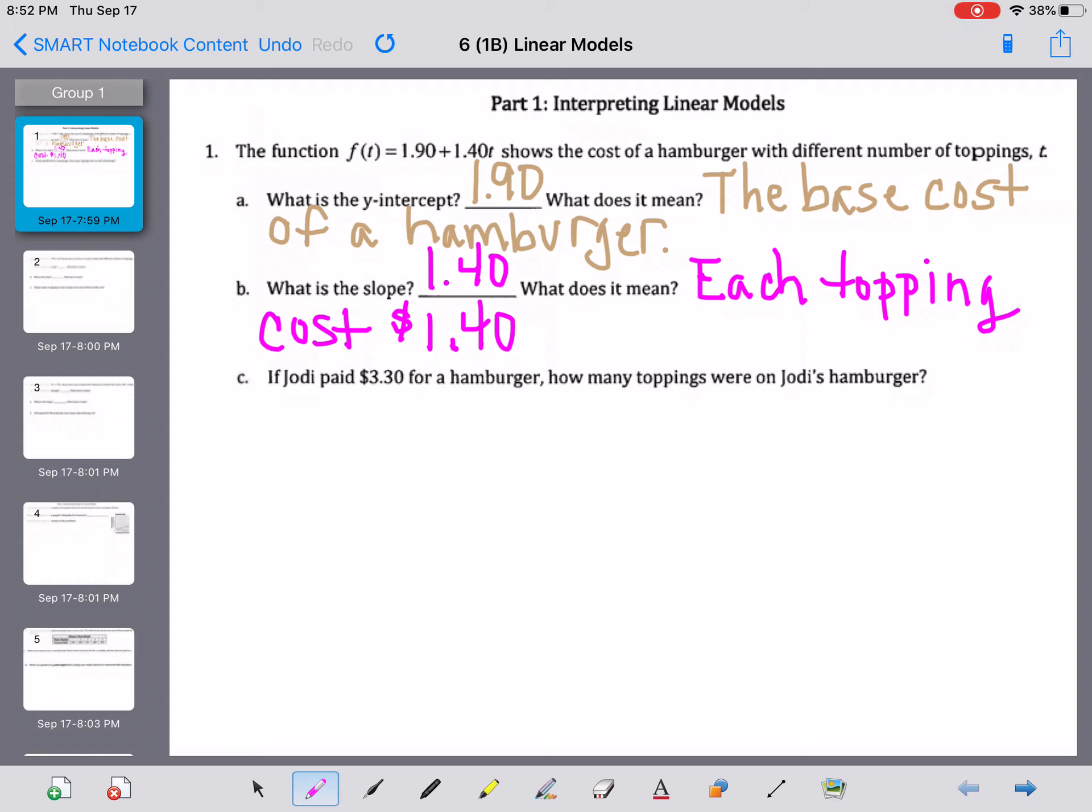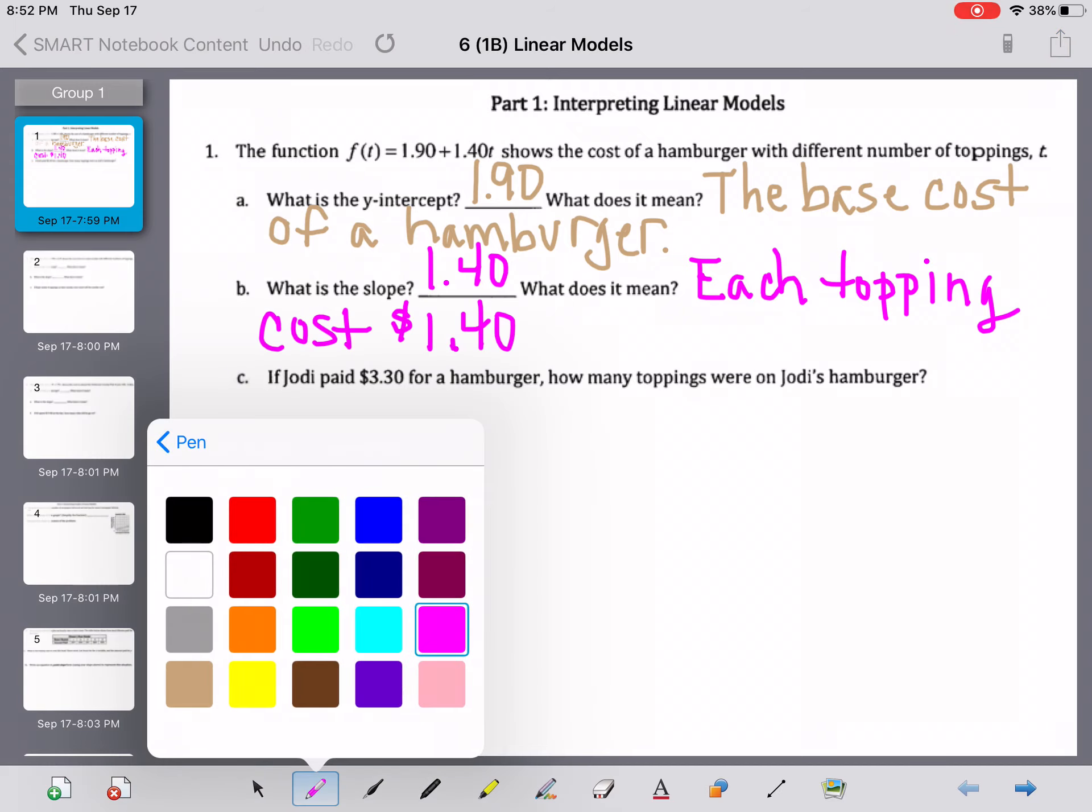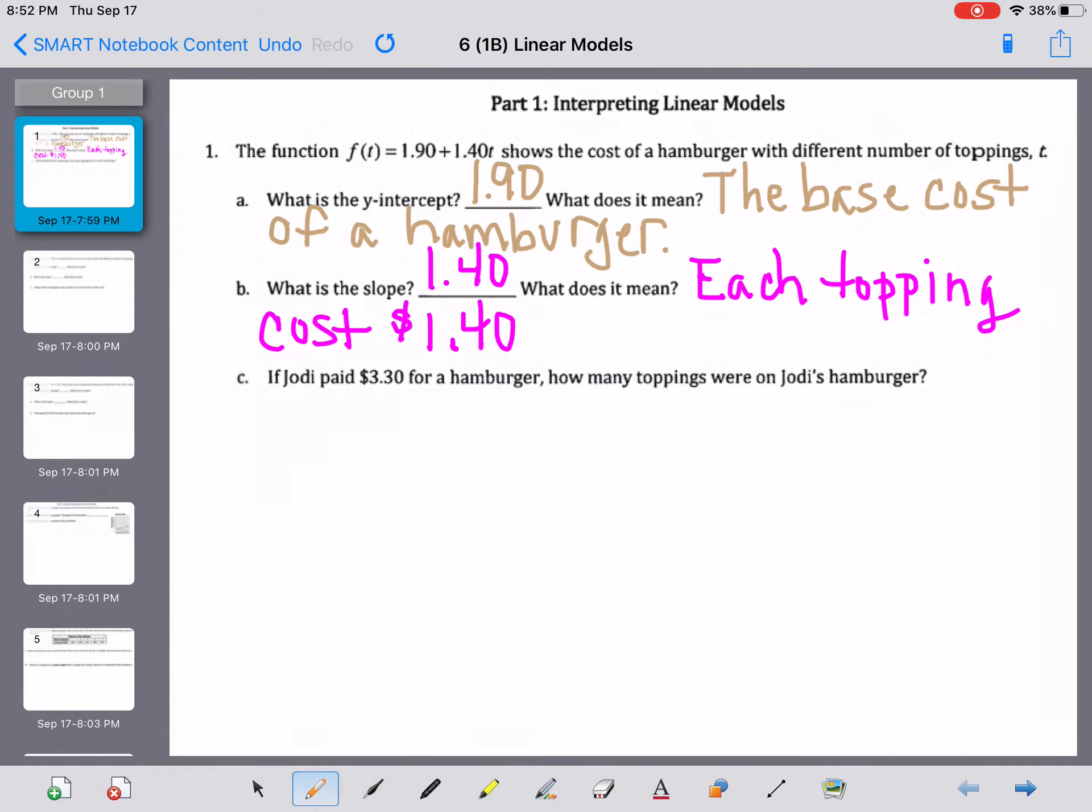Then part C, if Jody paid $3.30 for a hamburger, how many toppings were on Jody's hamburger? Well, that's the total cost. So the $3.30 is going to be the f(t). That's where it's going in the equation. What we're looking for is we want to know how many toppings. So we have to solve this equation, and we're going to start by subtracting 1.90 from both sides.